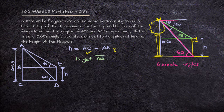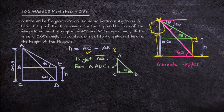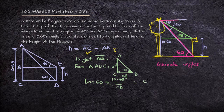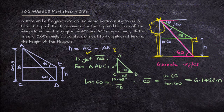To find AB, we look at triangle ADC — the bigger triangle. It is a right-angle triangle with AC = 10.65 meters and angle ADC = 60 degrees. We know the opposite and want to find the adjacent, so we use tan: CD = 10.65 over tan 60, which equals approximately 6.1488. From the diagram, CD is also equal to BE, so BE = 6.1488.